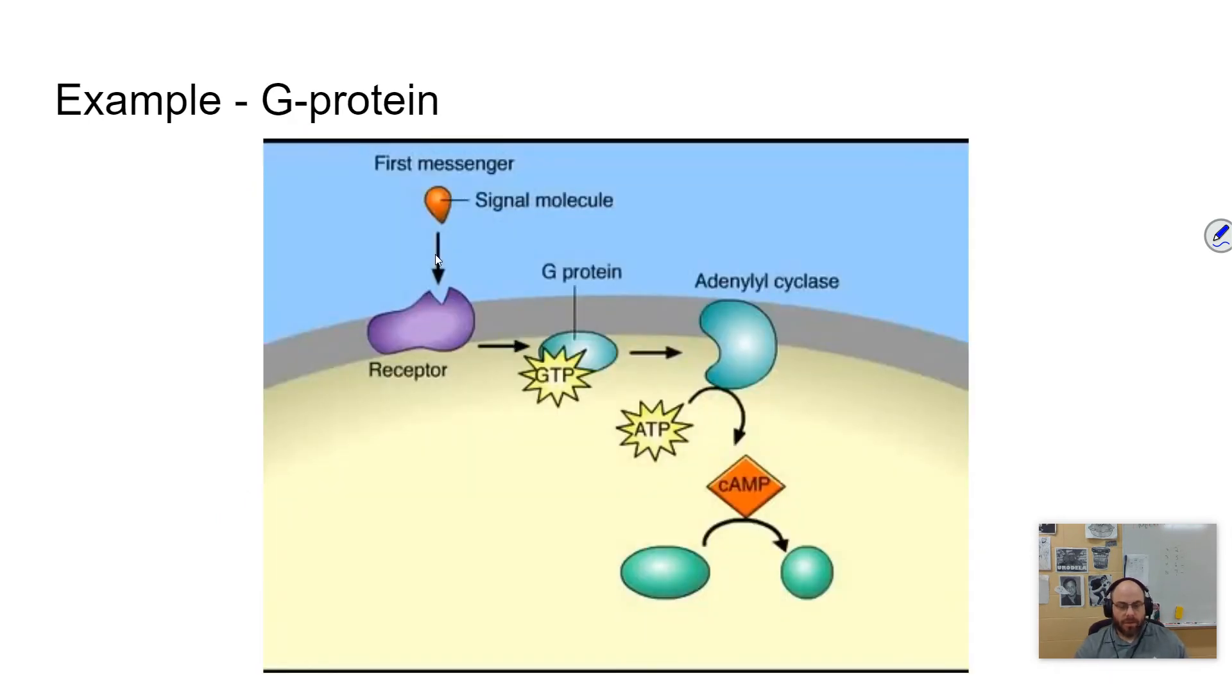And there's my G protein. And so here you go, you have a messenger and this receptor is going to receive that, and that's going to cause it to activate this G protein. And that G protein is going to go do something else, which would be part of that whole transduction sort of thing.